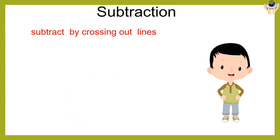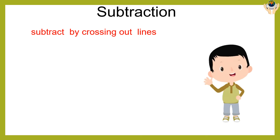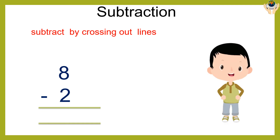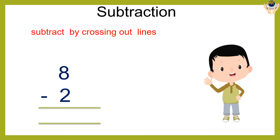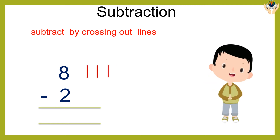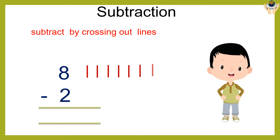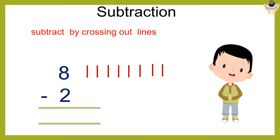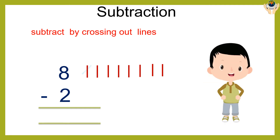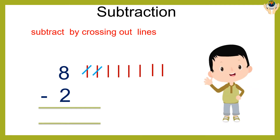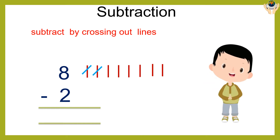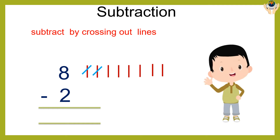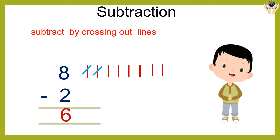In a similar way, we are going to subtract eight minus two. Draw eight lines, then cross out two lines: one, two. Now count the lines left: one, two, three, four, five, six. The answer is six.